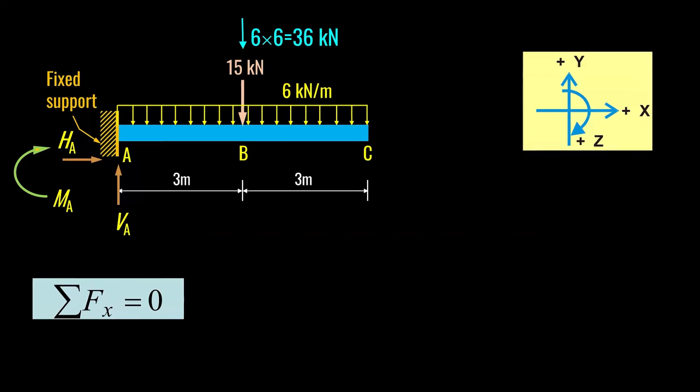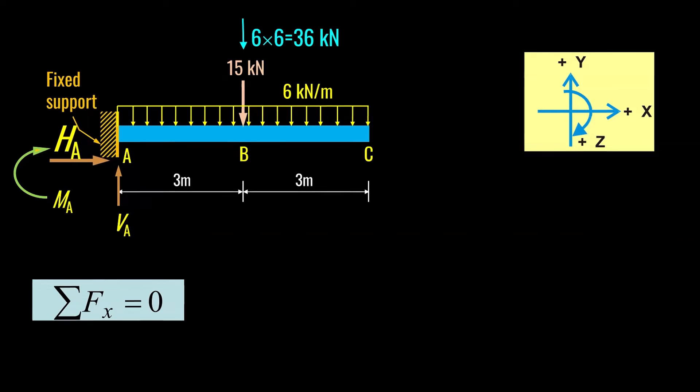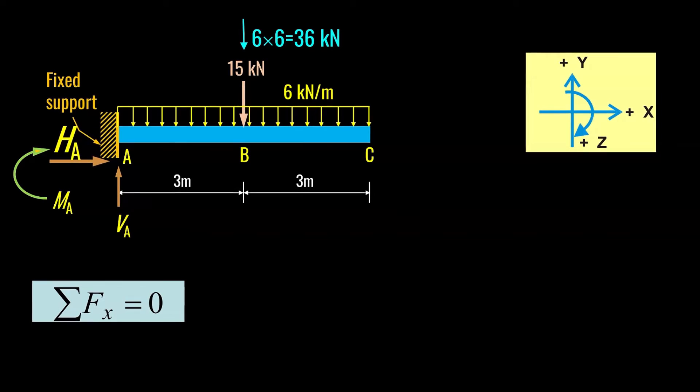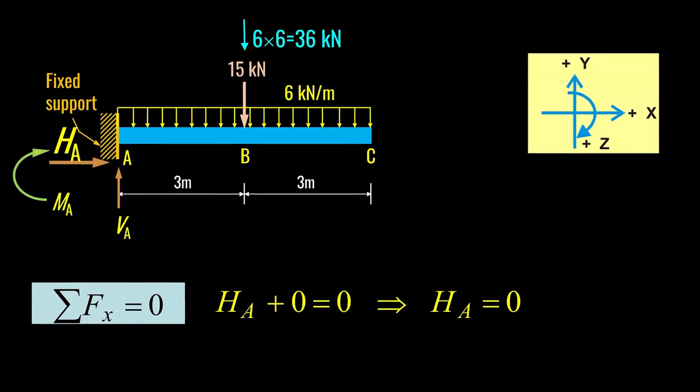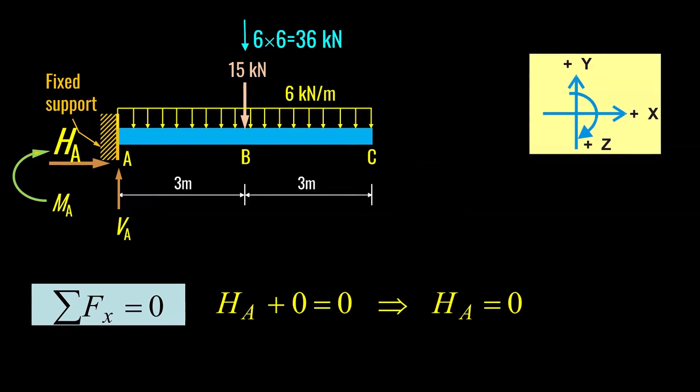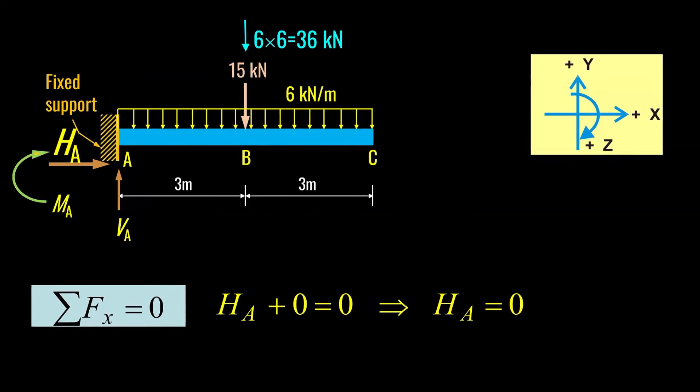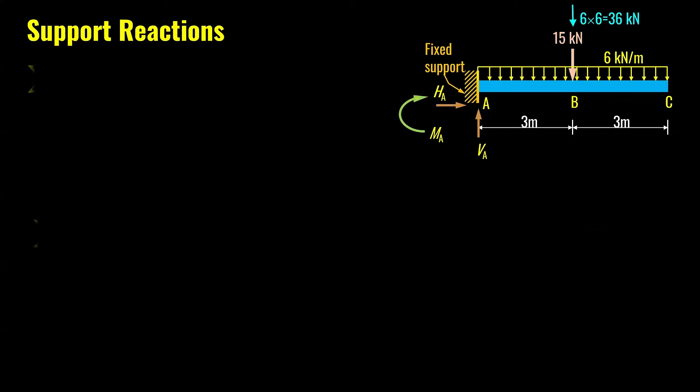Summation of horizontal forces equal to zero. There is only one horizontal force acting here HA, and you will equate this force to zero, which means reaction HA is zero. We still have to find out VA and MA.